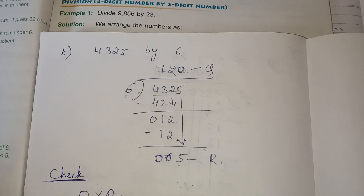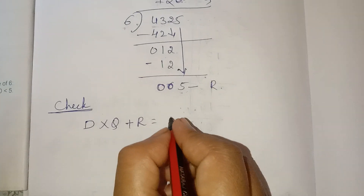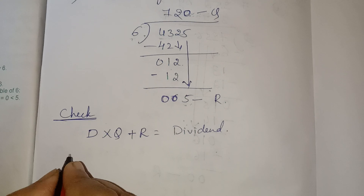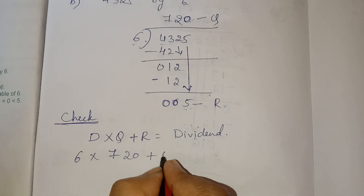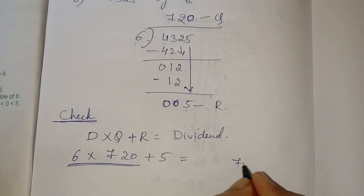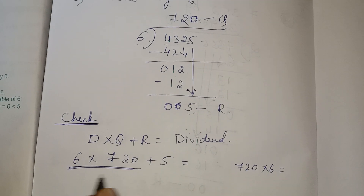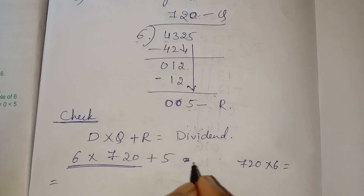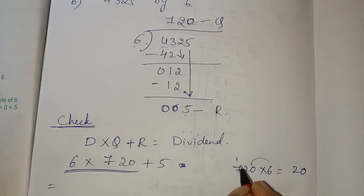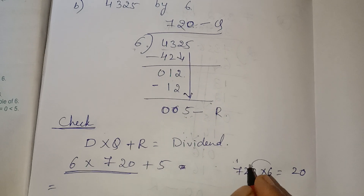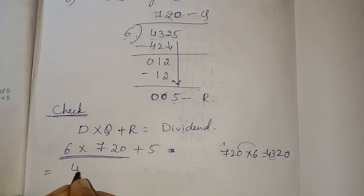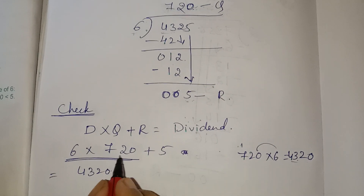Check your answer: divisor into quotient plus remainder equals dividend. Divisor is 6, quotient is 720, remainder is 5. Multiply 720 into 6: 6 zeros are 0, 6 twos are 12, 6 sevens are 42, plus 1 is 43. I got 4320 by multiplying 720 into 6.